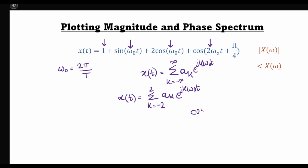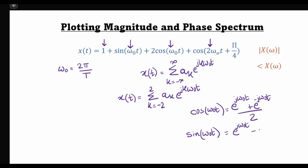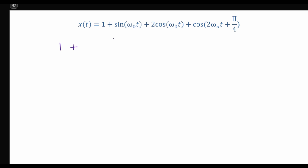We'll make use of two identities: cos(ω₀t) = (e^(jω₀t) + e^(−jω₀t)) / 2, and sin(ω₀t) = (e^(jω₀t) − e^(−jω₀t)) / 2j. We'll substitute these expressions for cosine and sine into x(t), then rearrange and combine terms to calculate the Fourier coefficients a_k.